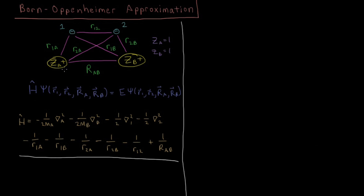We have four electron-nuclear attraction terms: the attraction of electron 1 to nucleus A and nucleus B, and the attraction of electron 2 to nucleus A and nucleus B. We have one term for the repulsion of electrons — the 1/R₁₂ term — and one term for the repulsion of the two nuclei, the 1/R_AB term.